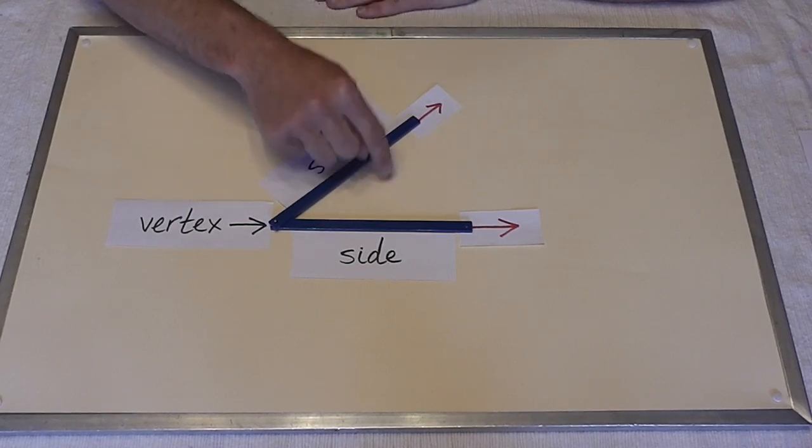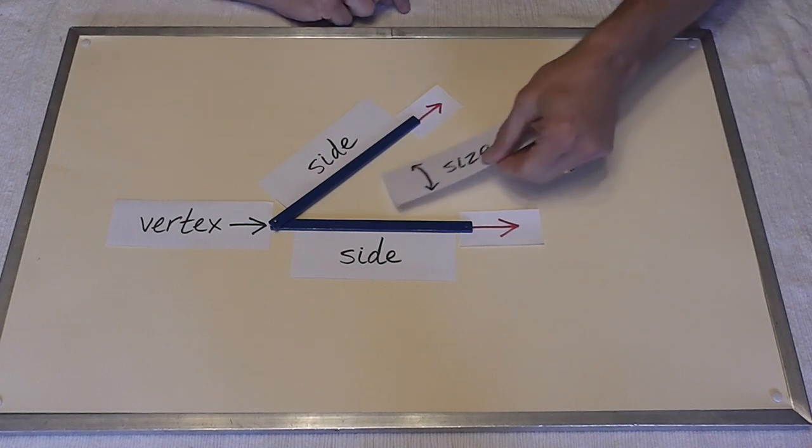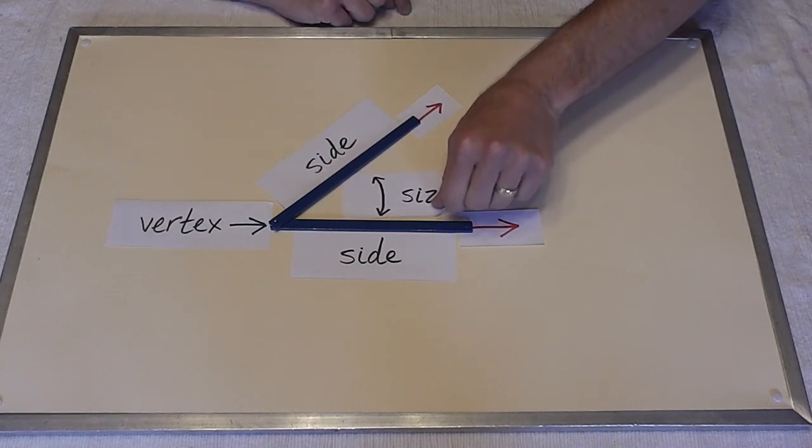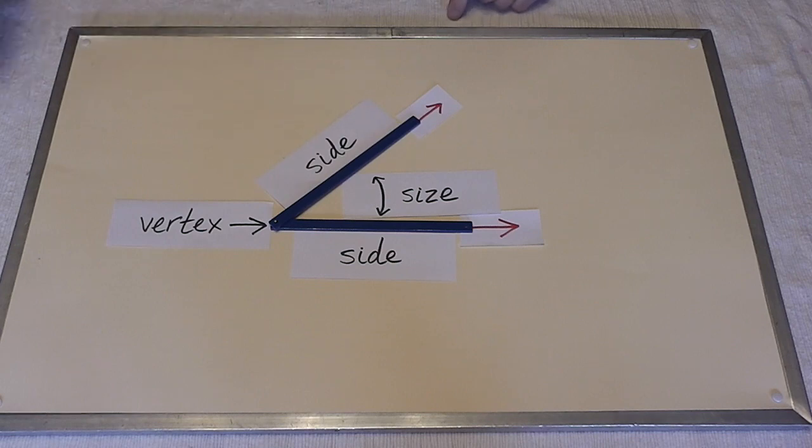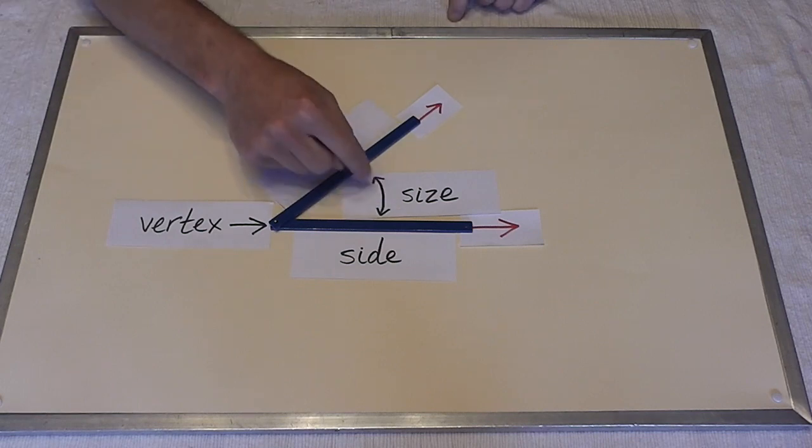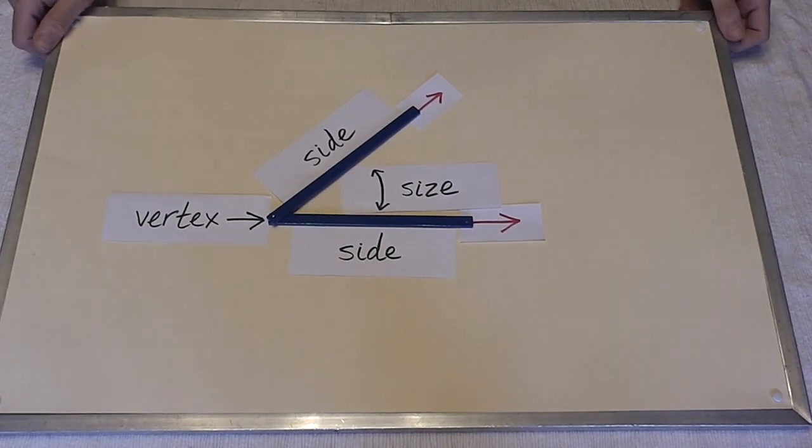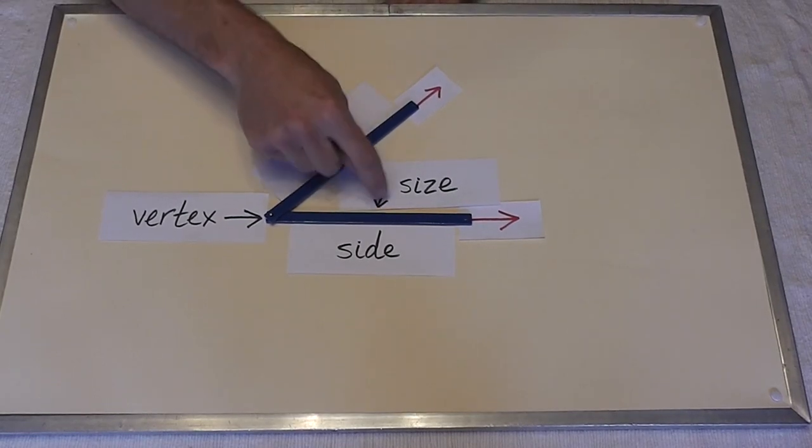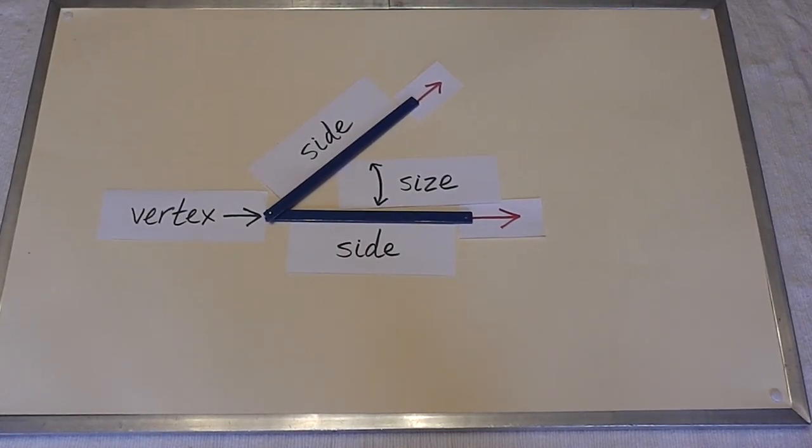And in the middle here is what we call the size of our angle. This is something that can be measured and we'll do that a little bit later, but this is our size.